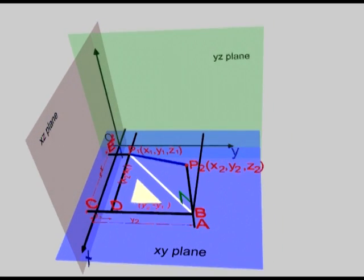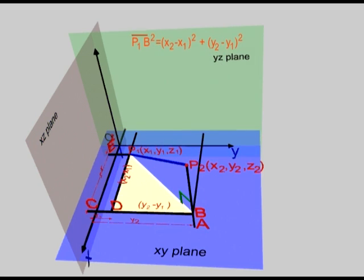For the right angle triangle P1DB and by Pythagoras theorem, P1B squared is equal to x2 minus x1 squared plus y2 minus y1 squared.